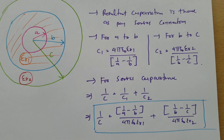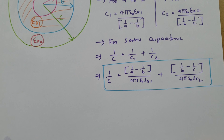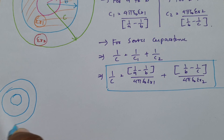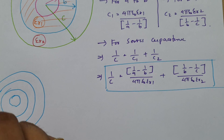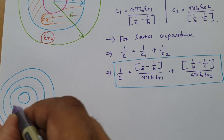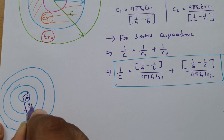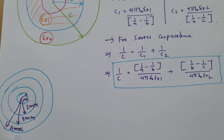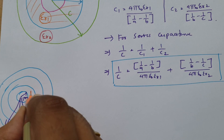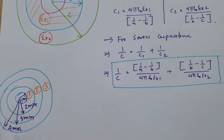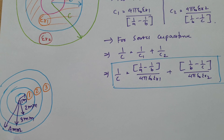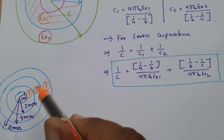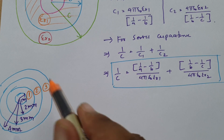Whenever you have multiple spheres, consider them in series and calculate accordingly. For example, with four spheres having radii 1 mm, 2 mm, 3 mm, and 4 mm, and dielectric constants of 1, 2, and 3 in the respective regions, there are three capacitors in series. Use C = 4πε₀εᵣ/(1/a − 1/b) for each and then apply 1/C = 1/C₁ + 1/C₂ + 1/C₃ to find the resultant capacitance.